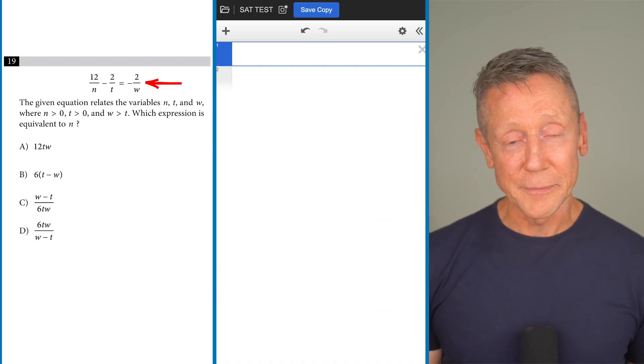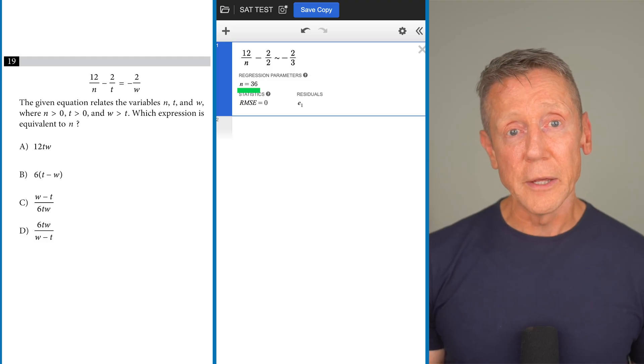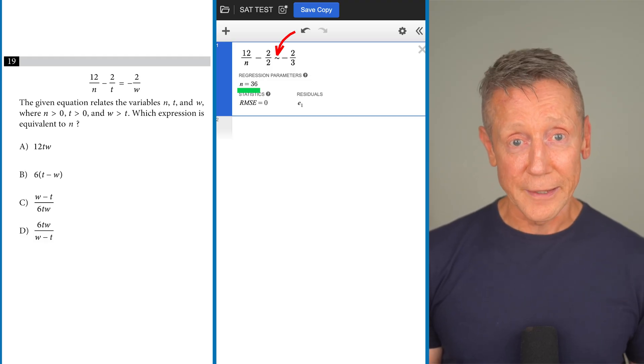Now let's type it into Desmos. Typing it in and there's my value of n. Now to get that value of n you're going to make sure you use a tilde instead of an equal sign.